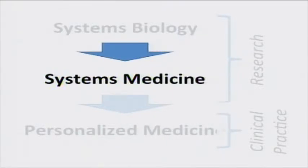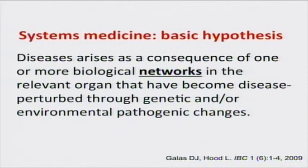Let's move this to systems medicine. Biology is anything before humans, in my mind. Systems medicine is research in humans, or at least human samples. The basic hypothesis of systems medicine is that disease arises as a consequence of one or more biological networks — not one gene, not one protein, not even one organ. There are networks in the relevant organ that have become disease-perturbed through genetic and/or environmental changes.